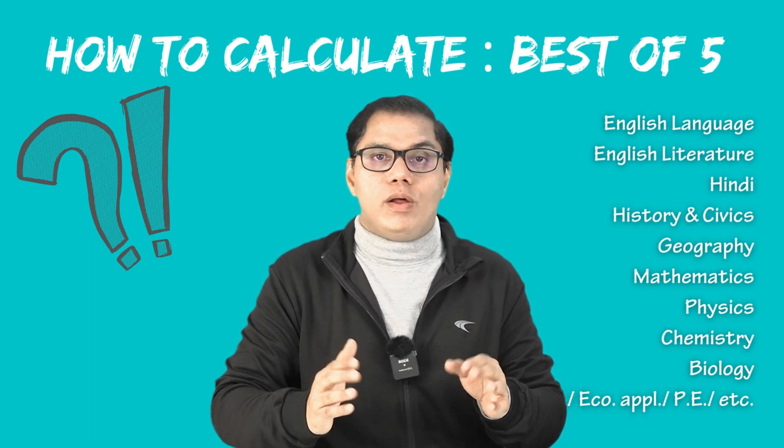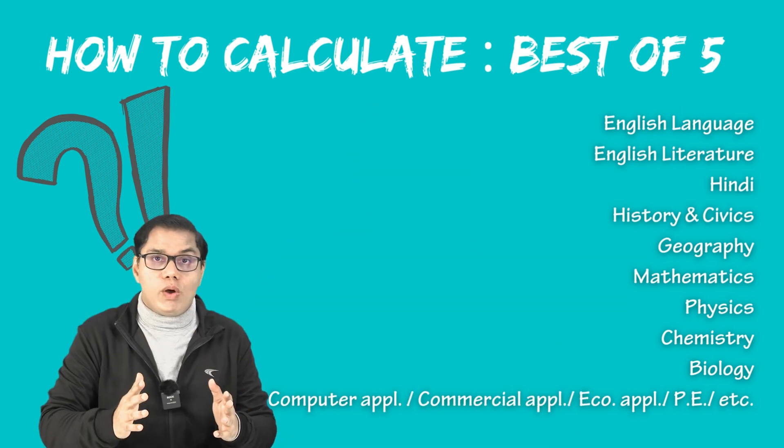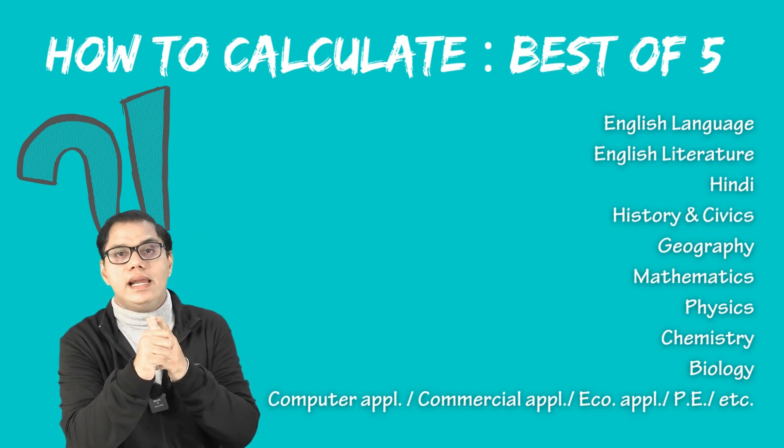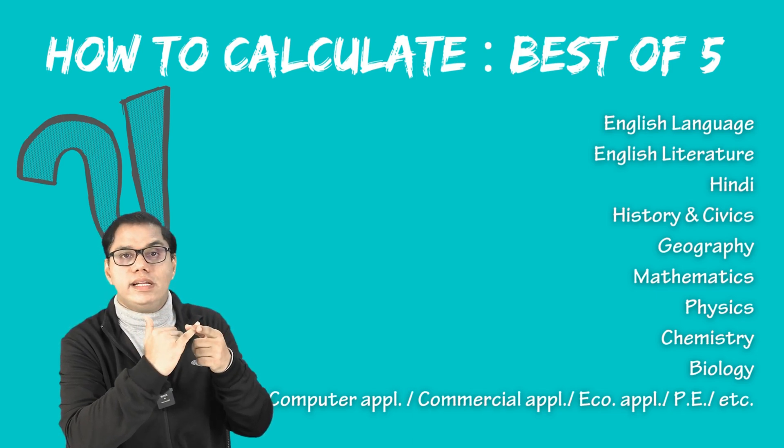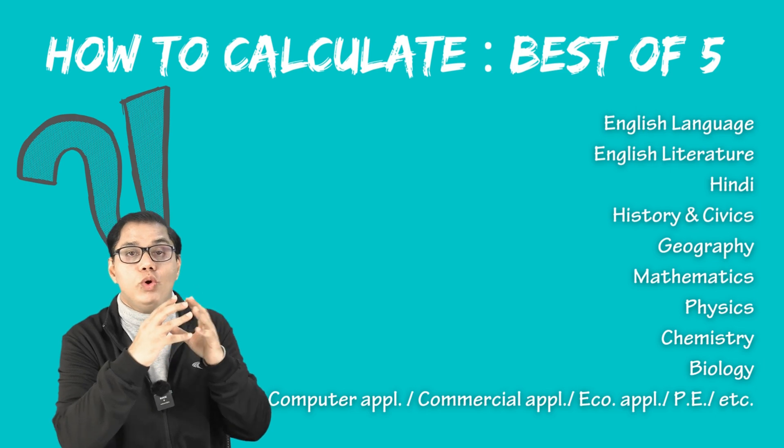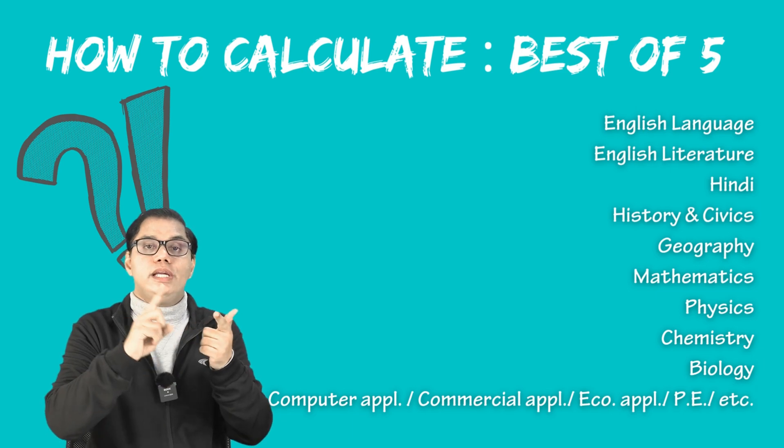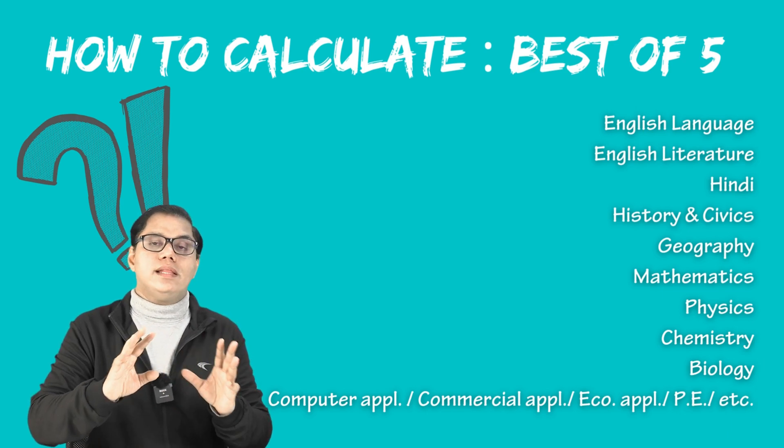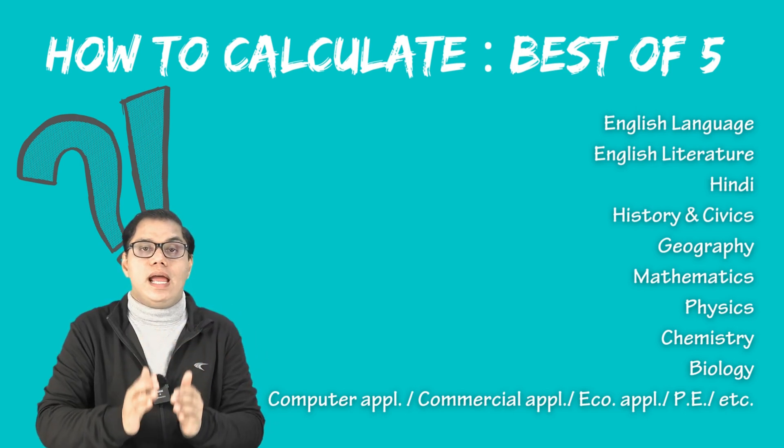We will take one example where we will assume some marks scored by a student for a better understanding. You were talking about 10 different subjects for which you have written the paper. Number one, English language, then English literature, Hindi, maths, history civics, geography, physics, chemistry, biology and tenth one, Group three elective subjects. One of these subjects that is computer application, economic application, physical education, commercial application or any other subject which you might have selected.